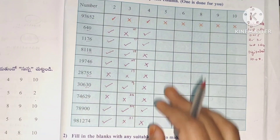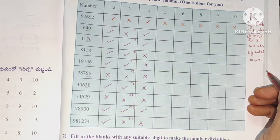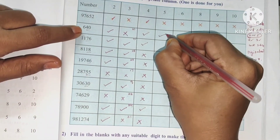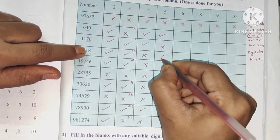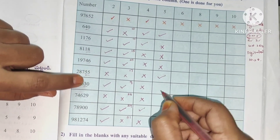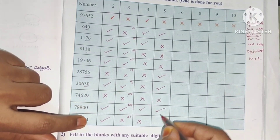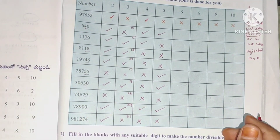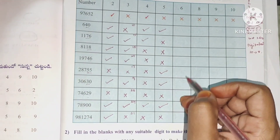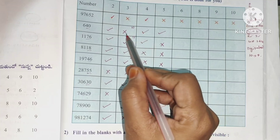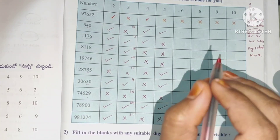For divisibility by 5, units place must be 0 or 5. Units place 0 — yes. 6 — no. 8 — no. 6 — no. 5 — yes. 0 — yes. 9 — no. 0 — yes. 4 — no. Very simple with 5.